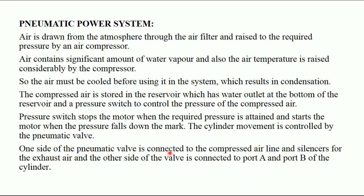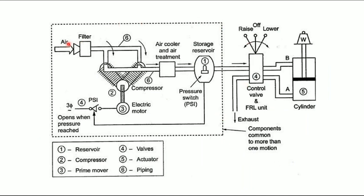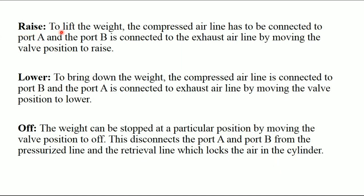One side of the pneumatic valve is connected to the compressed air line and sirens are for the exhaust air, and the other side of the valve is connected to port A and port B of the cylinder. Here the pump is replaced by a compressor; almost all remaining components are similar to hydraulic components. Rise: To lift the weight, the compressed air line is connected to port A and port B is connected to the exhaust air line by moving the valve position to rise. Lower: To bring down the weight, the compressed air line is connected to port B and port A is connected to the exhaust air line by moving the valve position to lower. Off: The weight can be stopped at any particular position by moving the valve position to off.